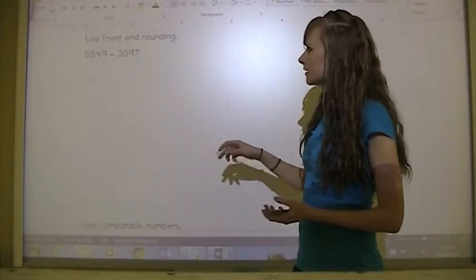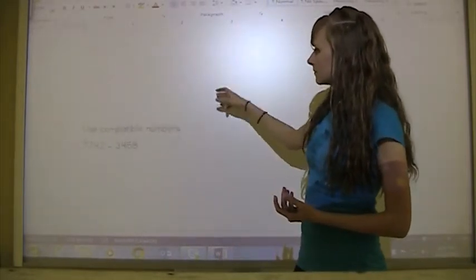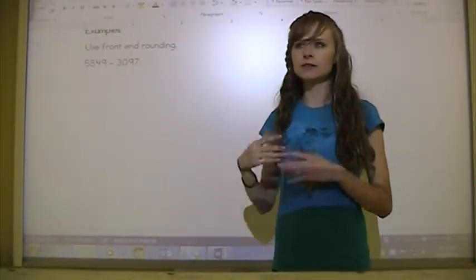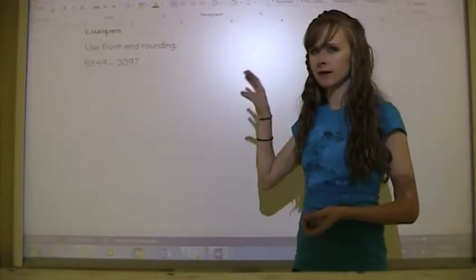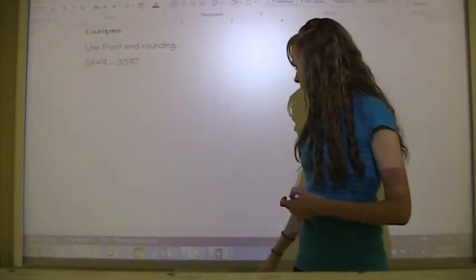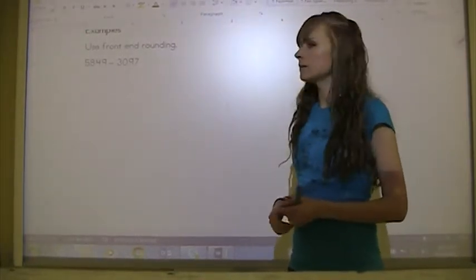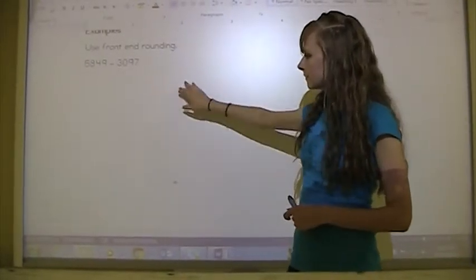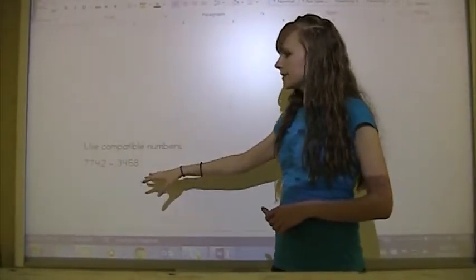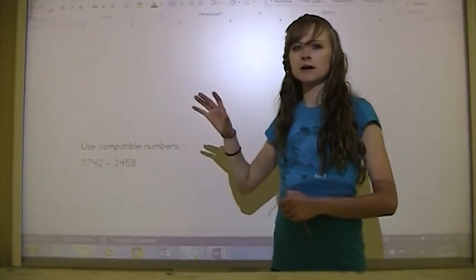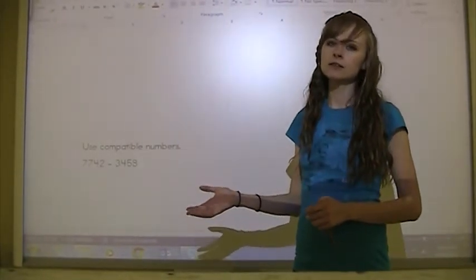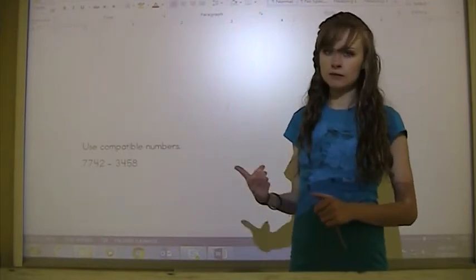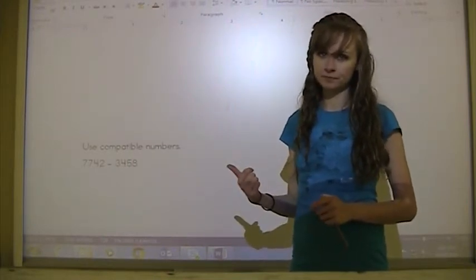We've got some examples here. We're going to use front end rounding, or the rounding method I showed you in the very beginning. You don't necessarily have to do all those steps in the example that was read. You're going to answer this one using front end rounding and answer this one using compatible numbers. Once you've finished that, you're going to watch me do it. You're going to need to pause the video right now and complete these two questions.